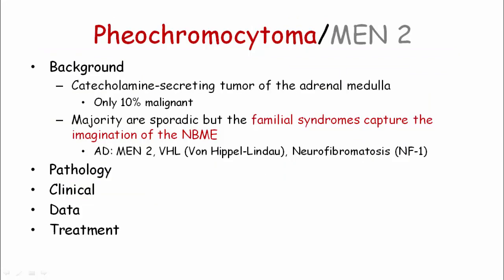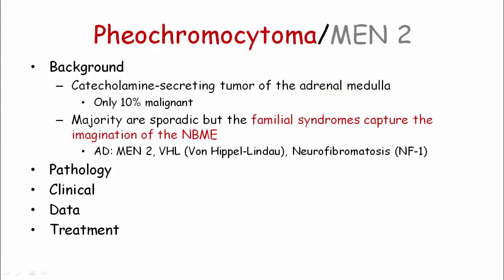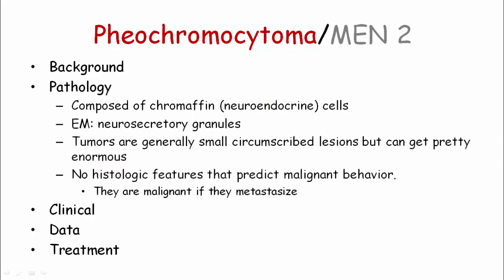Pheochromocytoma is a catecholamine-secreting tumor of the adrenal medulla that is, by and large, a benign tumor — only 10% present as malignant. The majority of neoplasms are sporadic; however, the familial or inheritable syndromes are much more interesting to the NBME. The familial syndromes are all autosomal dominant. Half the patients with MEN2 will have pheo, whereas only 20% of those with von Hippel-Lindau syndrome will have pheo. Neurofibromatosis is mentioned for completeness, and pheo is only rarely seen with that syndrome.